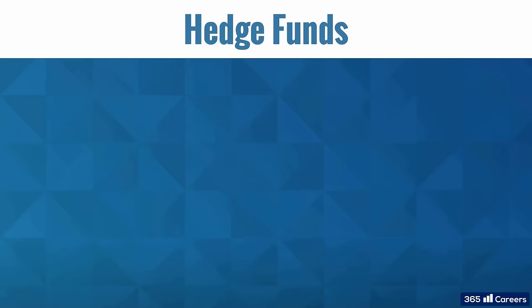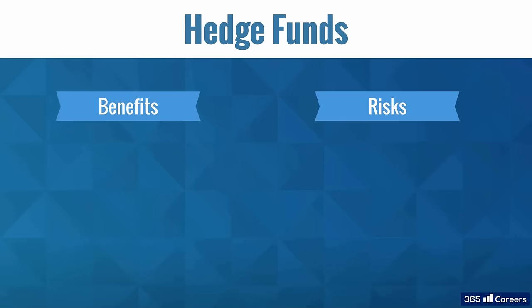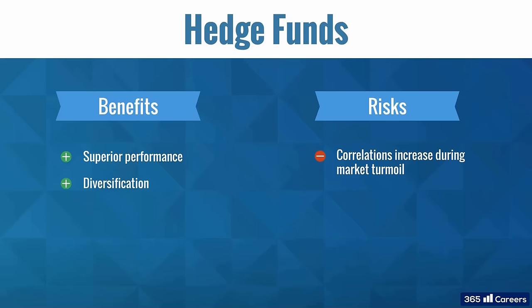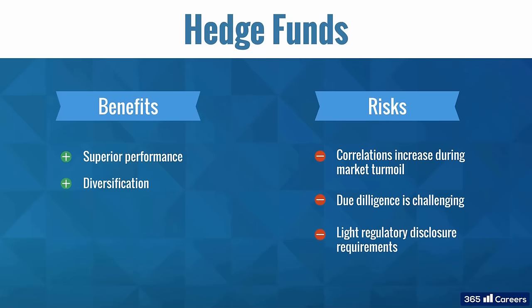Our next task is to examine the potential benefits and risks of hedge funds. The benefits are most visible in down-equity markets, where hedge funds typically perform better than global equity markets. Long-term correlation with equities can also provide diversification benefits, though these vary according to the specific hedge fund strategy. Because of the great variety of hedge fund strategies and the tendency for correlations to increase during periods of market turmoil, we should be careful when generalizing about diversification benefits. Moreover, doing due diligence on hedge funds can be quite challenging, as these investment vehicles have light regulatory disclosure requirements, which potentially makes them less transparent.